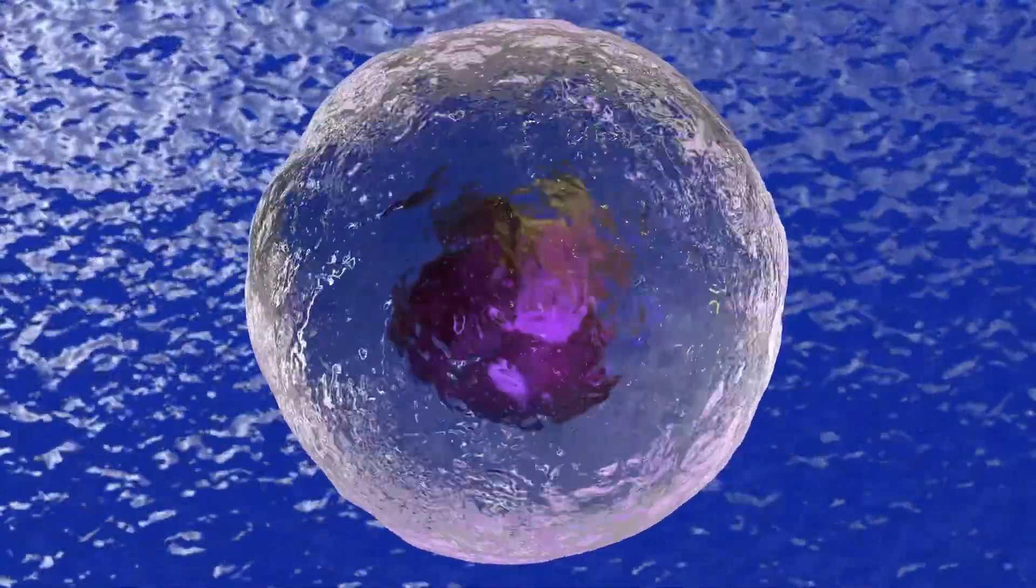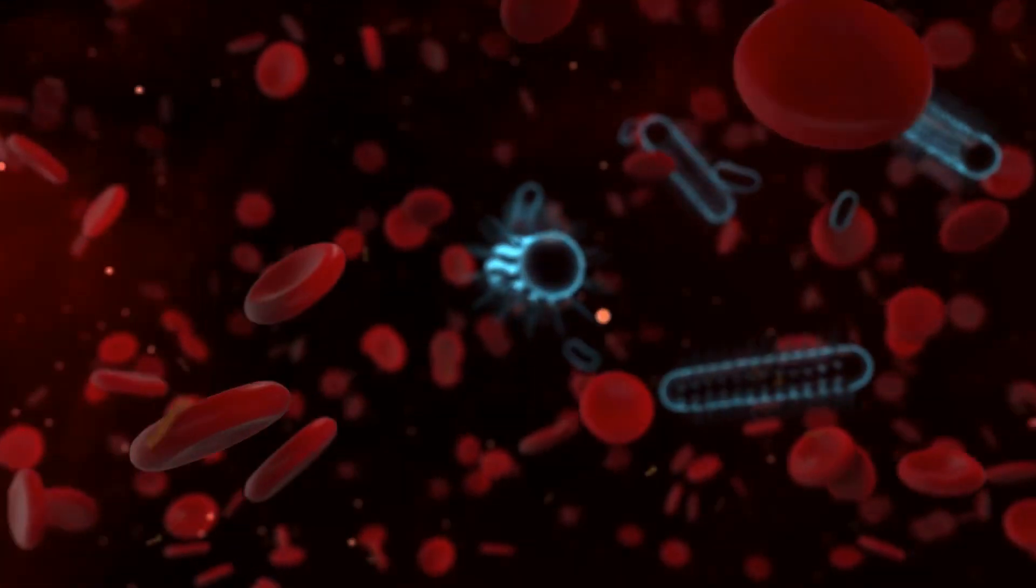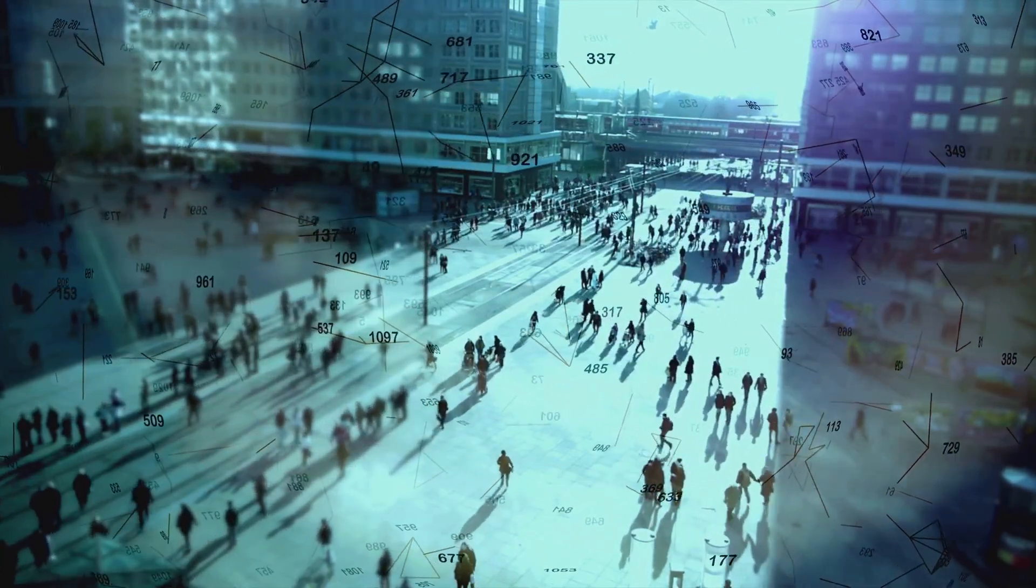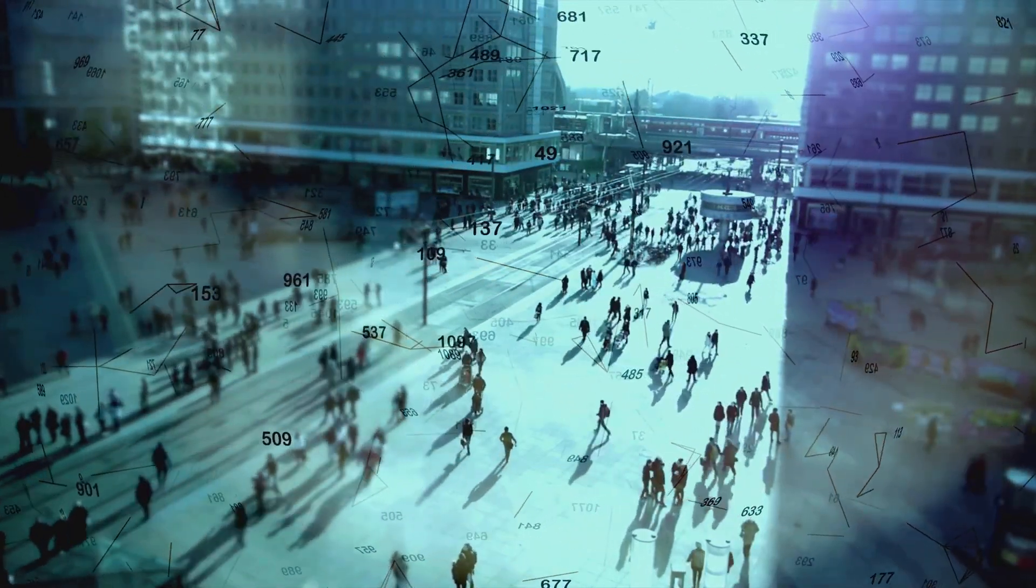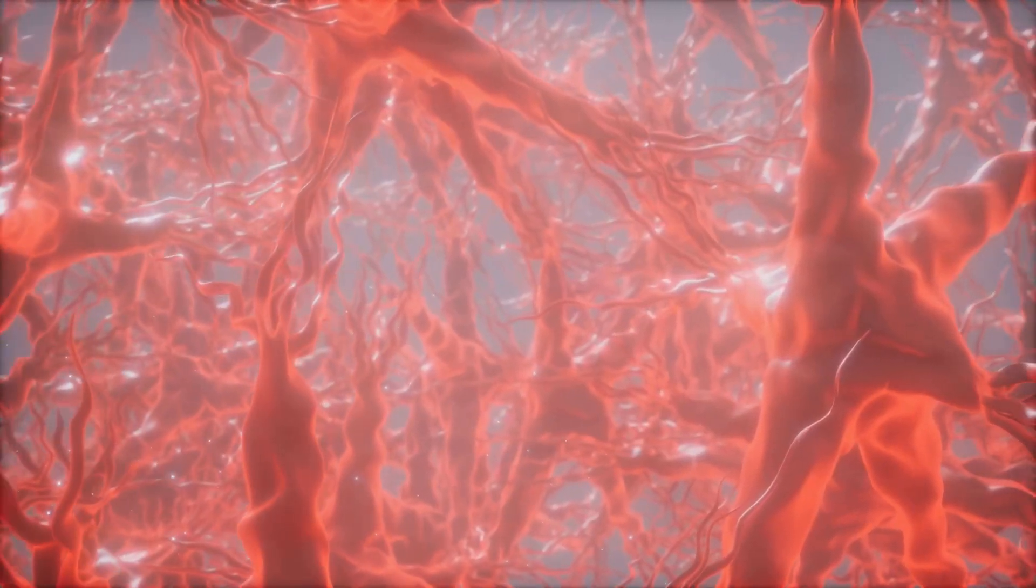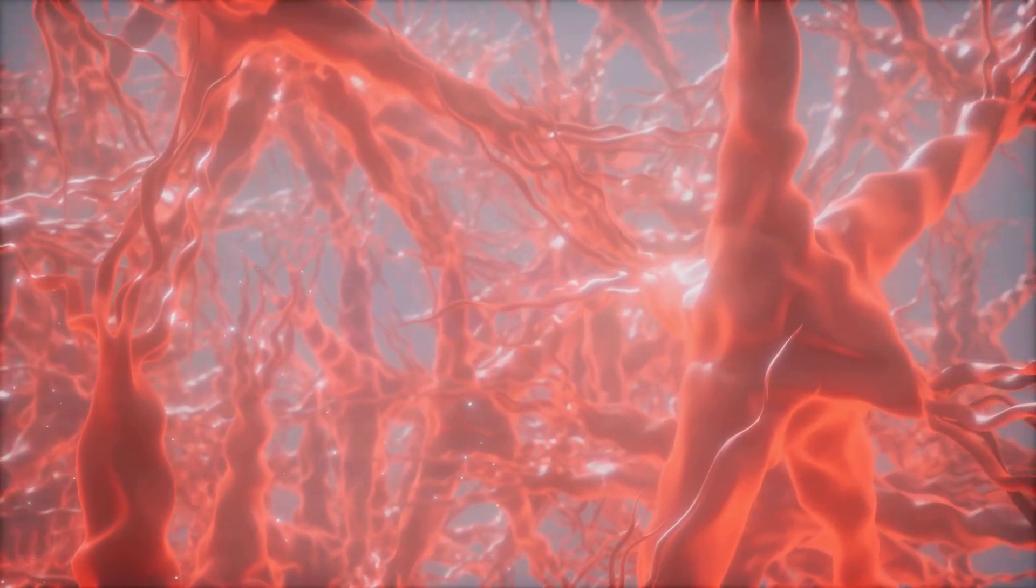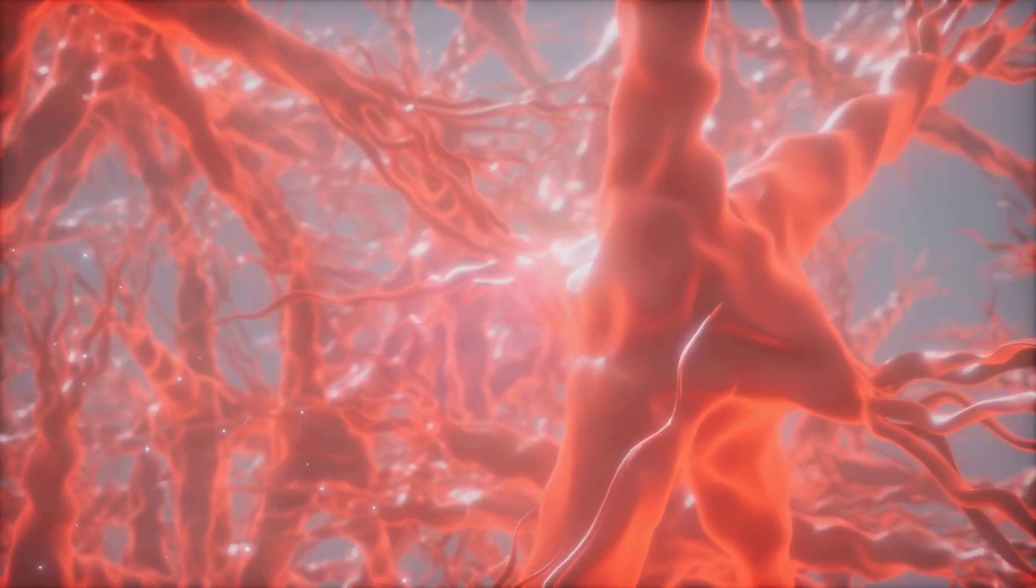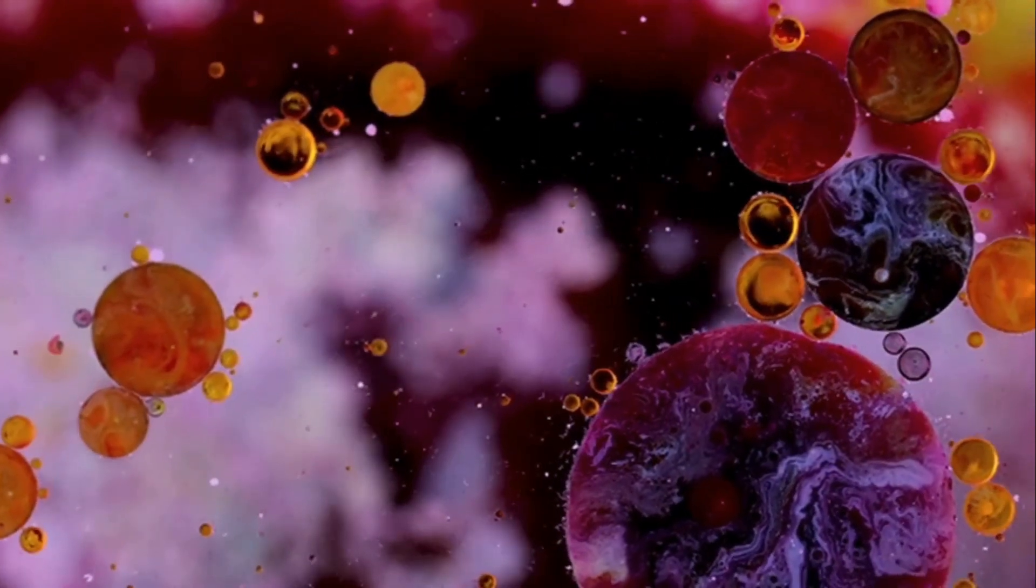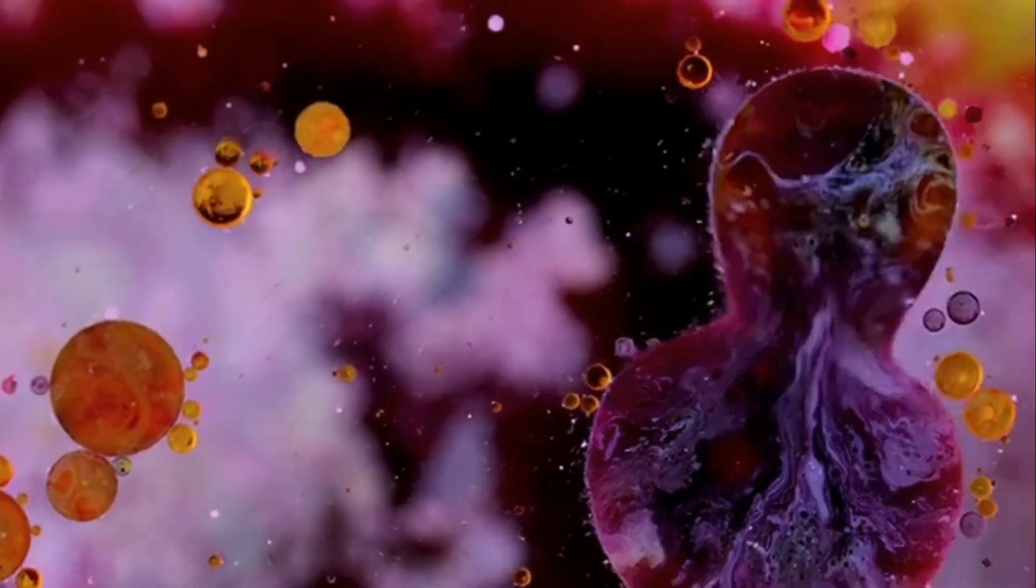Imagine shrinking down, smaller than a breadcrumb, small enough to slip inside a single cell in your body. You'd find yourself in a bustling metropolis, a hive of activity with countless molecules going about their business. And suspended within this cellular city, you'd encounter a vast interconnected network of folded membranes. This is the endoplasmic reticulum, or ER for short, and it's one of the most vital structures in the cell.